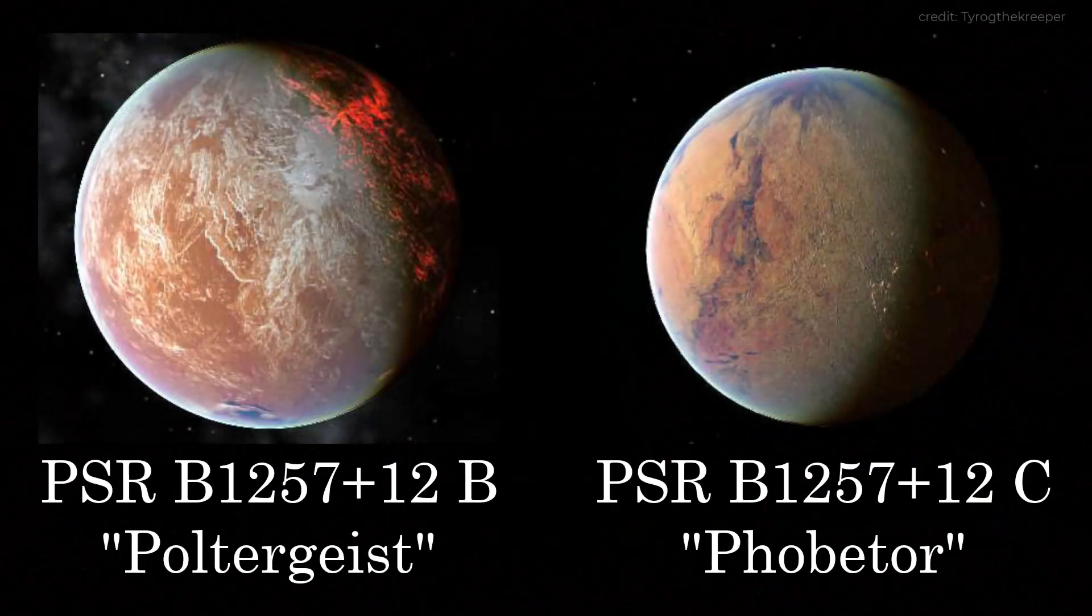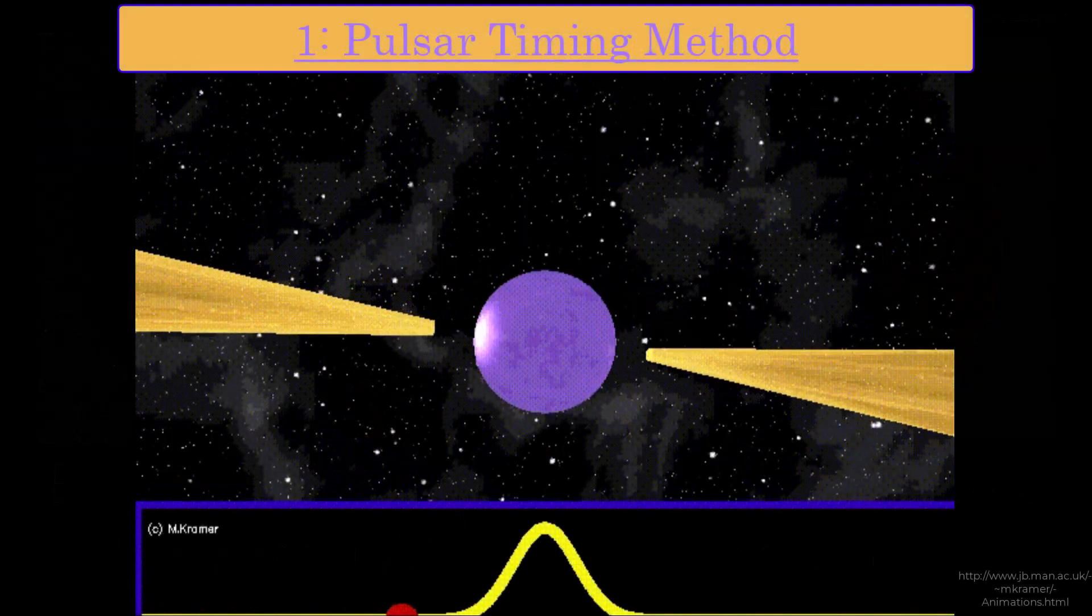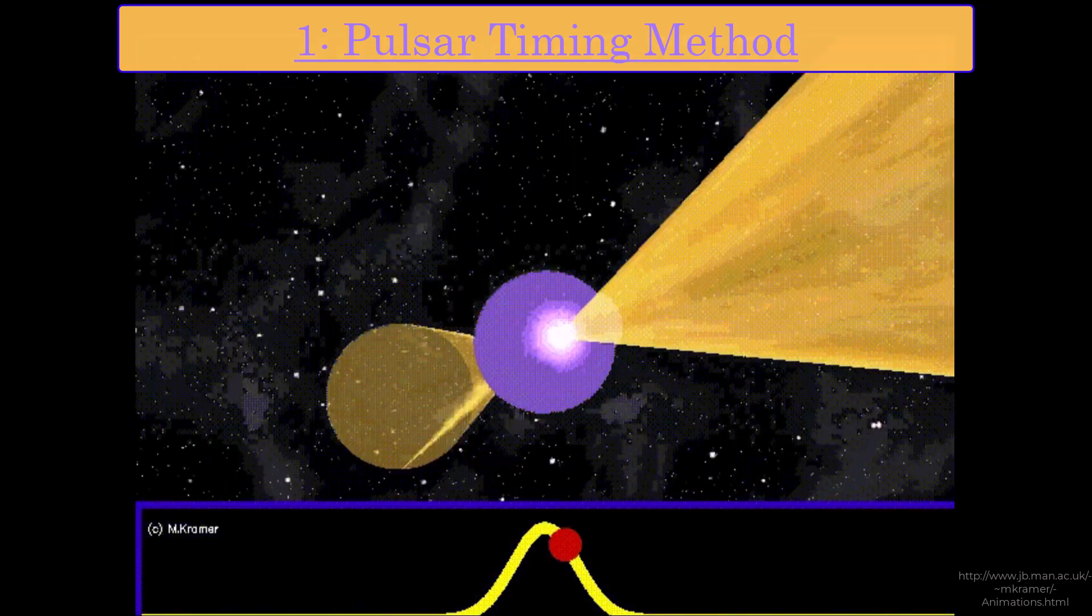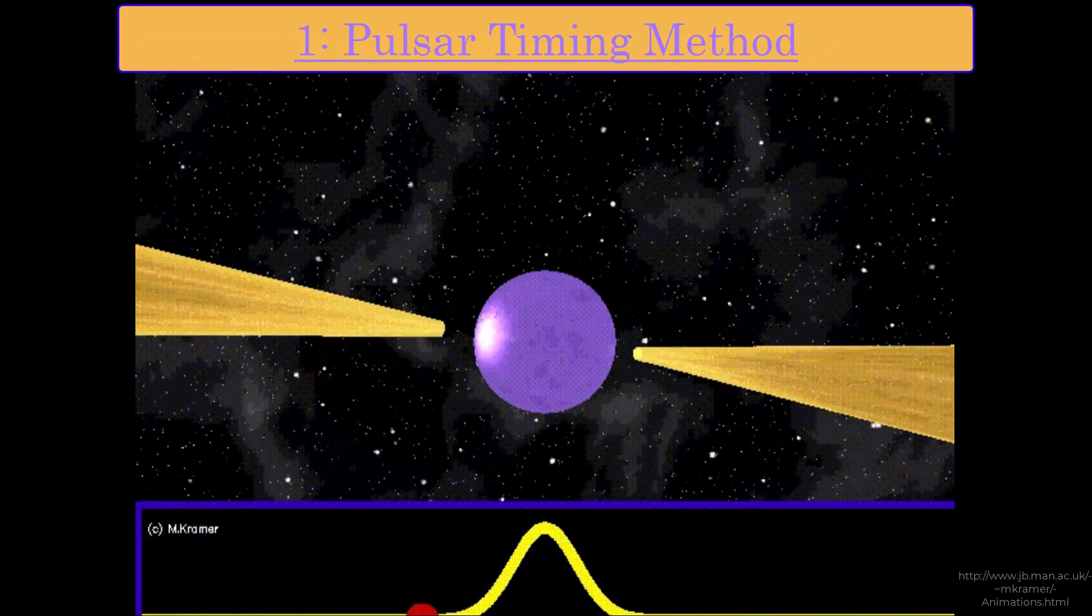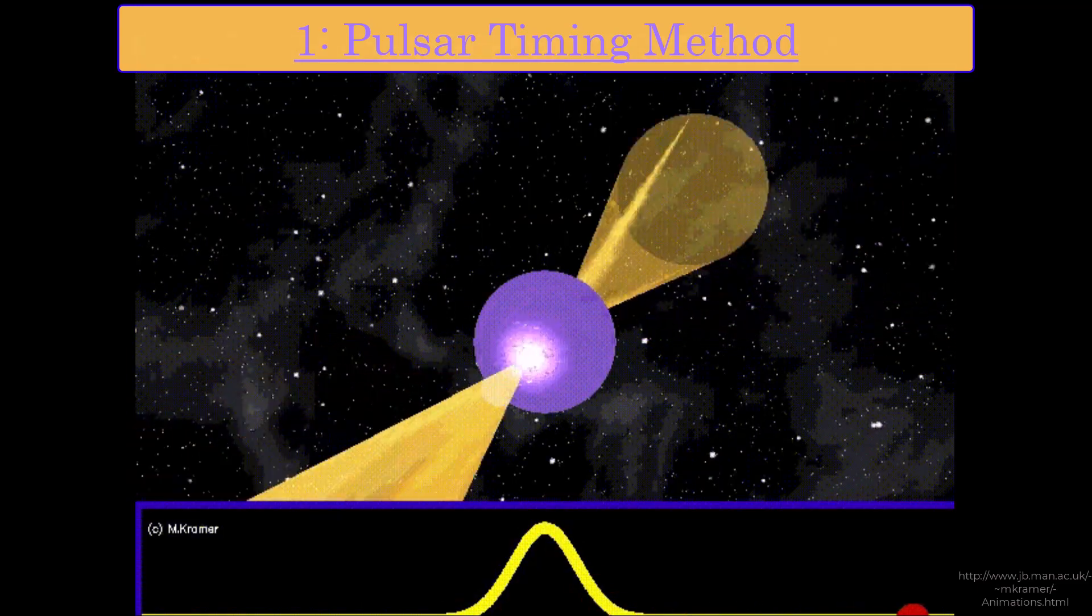Phobetor was one of the first exoplanets to be discovered. In fact, it was the first to be confirmed along with Poltergeist, another super-Earth orbiting the same star. Or, to be more precise, pulsar. These are neutron stars which are rotating incredibly quickly. The one in our example rotates around once every 6 milliseconds. That's the entire star spinning over 160 times per second.